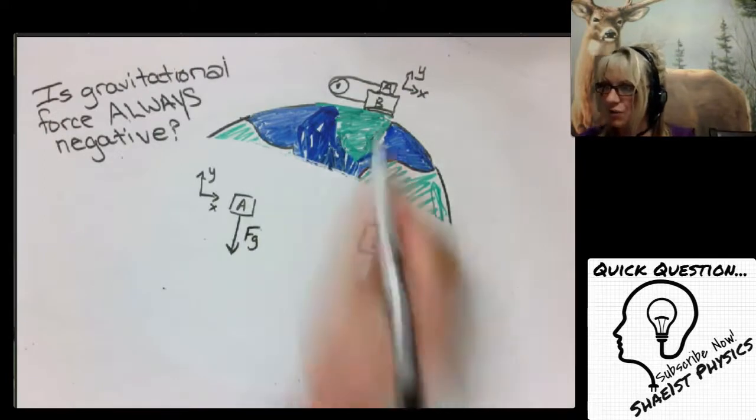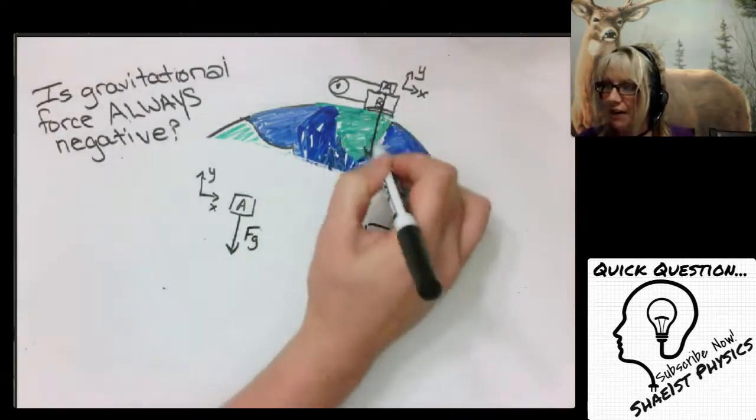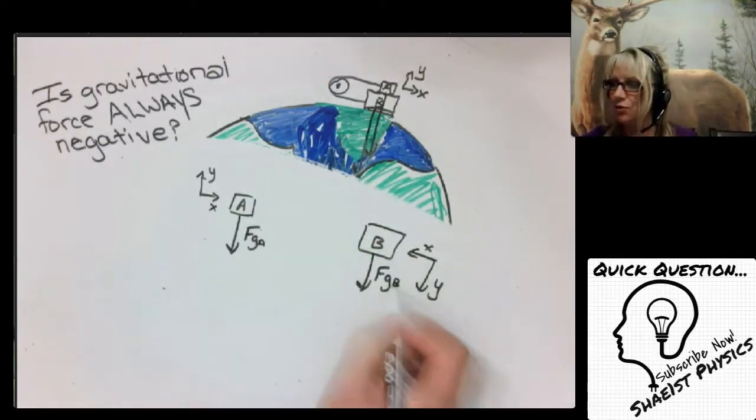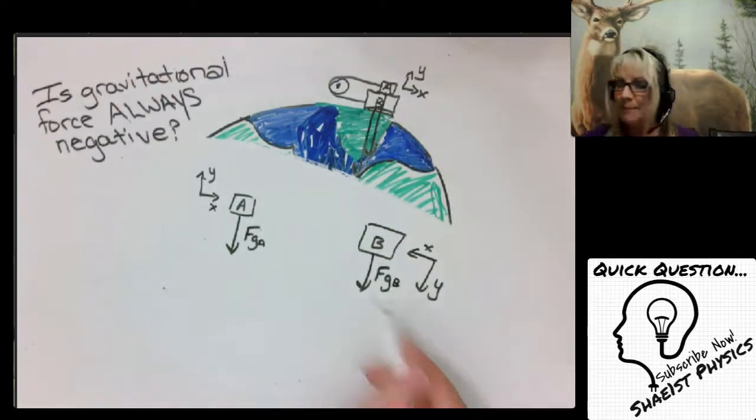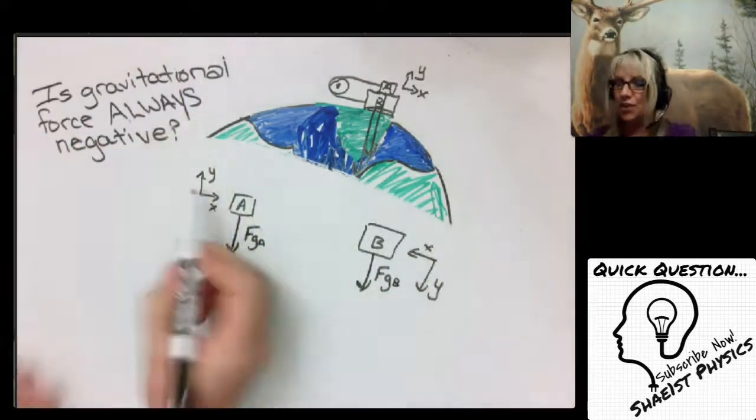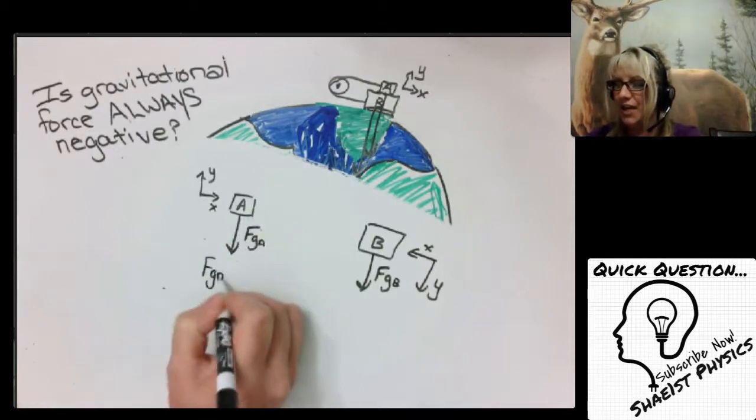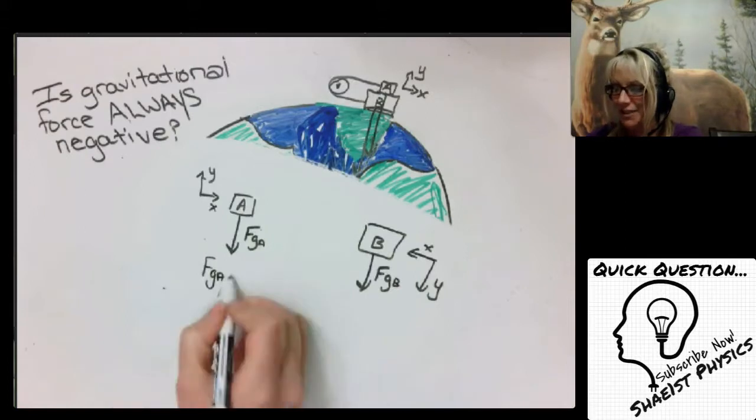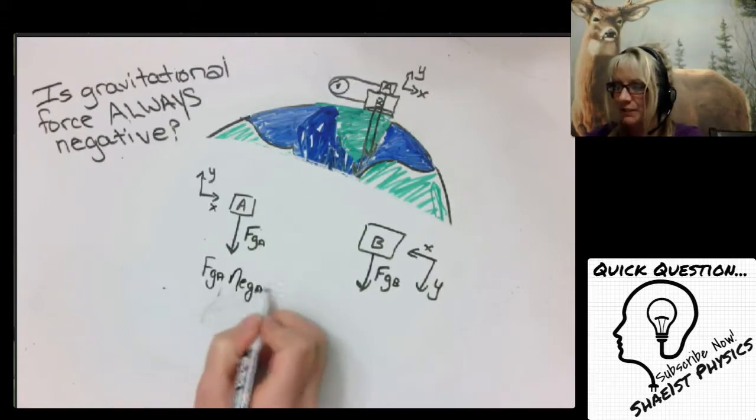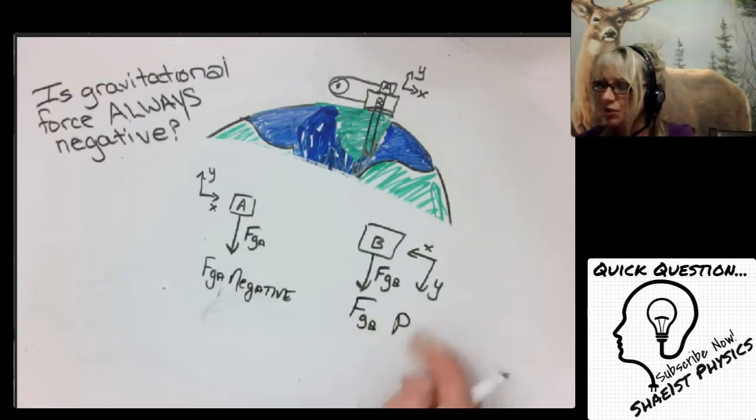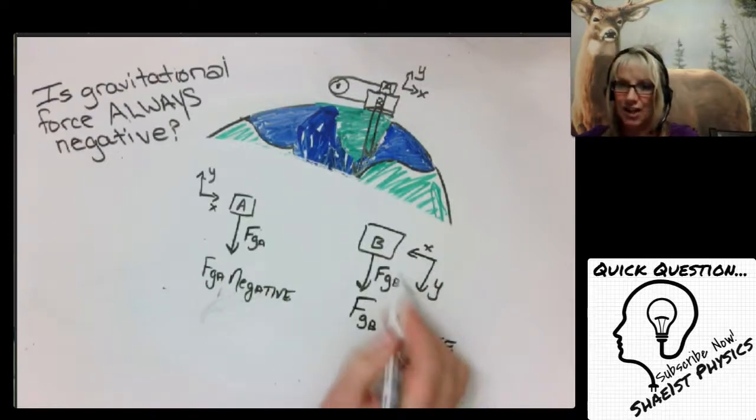Well in both cases the force of gravity still acts down towards the center of the earth. So this would be the force of gravity of box A and the force of gravity of box B. It still acts down towards the center of the earth. However in this case it's going in the opposite direction as we define positive y. So FgA here will be negative because it's in the opposite direction. However Fg over here is going to be positive because it's going in the same direction as our axis.